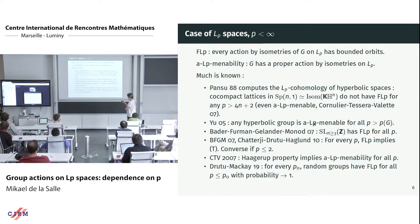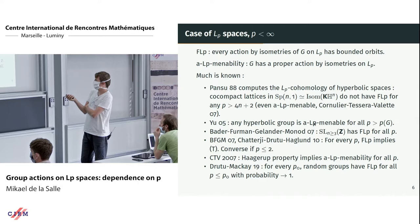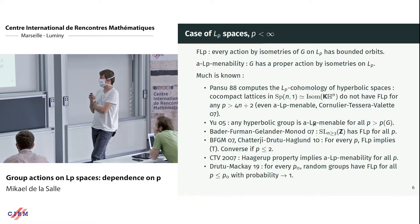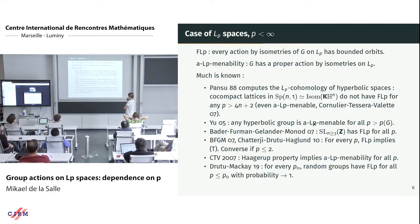This theorem of Pansu for co-compact lattices — which are examples of hyperbolic groups — was vastly generalized by Yu. The conclusion of Yu's result is: if you have any hyperbolic group, there is a large value depending on G such that you have a proper action on LP spaces for all p greater than this value. Comparable to positive results is the solution by Bader, Furman, Gelander, and Monod of their conjecture for LP spaces: in higher rank you cannot have proper actions on LP spaces.